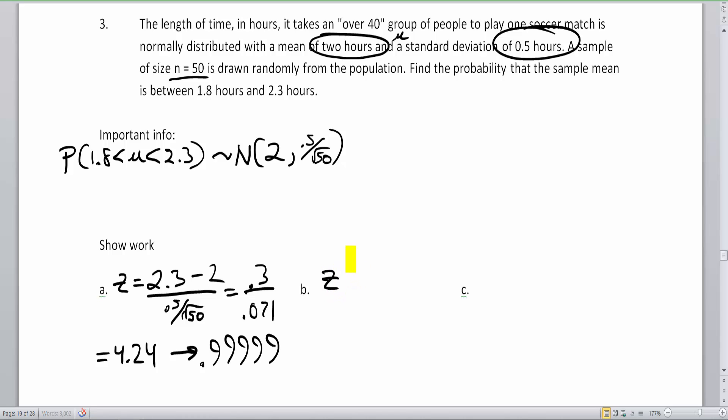Okay, now we go to the lower number, which should be a little easier to find since it's not off the chart. 1.8 minus 2 divided by 0.5 divided by the square root of 50, which is going to be negative 0.2 divided by 0.071. And that negative 0.2 divided by the 0.071 is going to give me a Z score that will be not off the chart, negative 2.83.